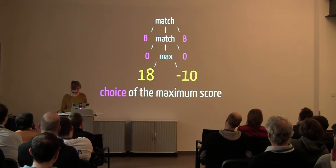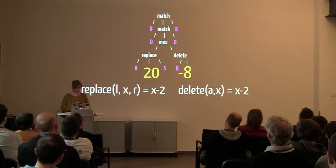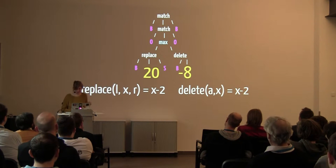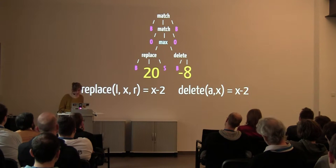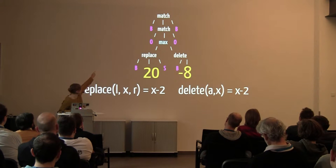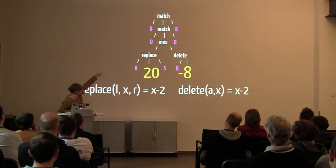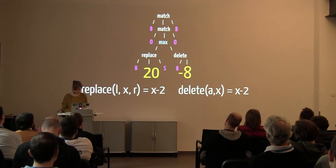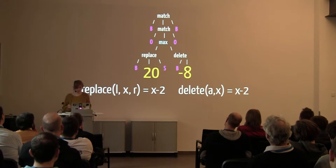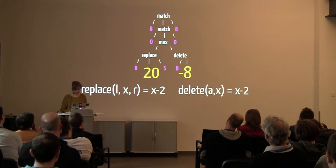Why are these two numbers different? There are two different things happening: on the left side there is a replacement, and on the right side there is a deletion. We can read from the top of the tree something like B-O-B then B-O-S on the left, and B-O-B then B-O with nothing on the right. We write down: replace of two different letters L and R costs minus two, and delete also costs minus two.